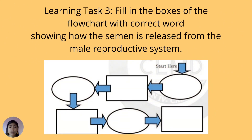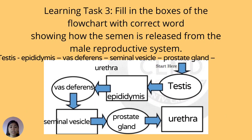For our third learning task, fill in the boxes of the flowchart with the correct word showing how semen is released from the male reproductive system. The correct answer pathway is: testes → epididymis → vas deferens → seminal vesicle → prostate gland → urethra.